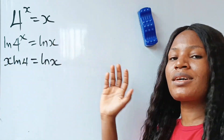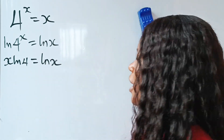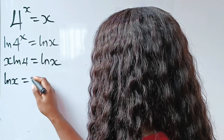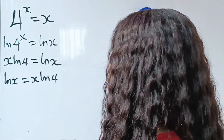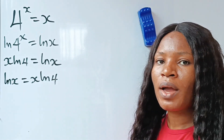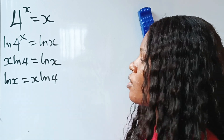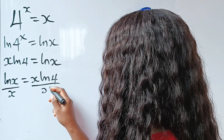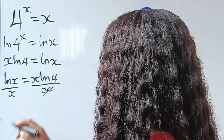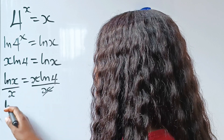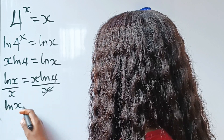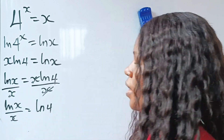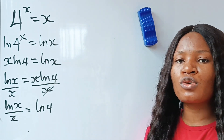Now let's rearrange — we can write ln(x) = x·ln(4). Dividing both sides by x, we get ln(x)/x = ln(4).